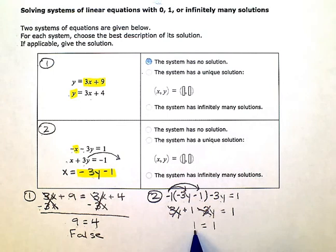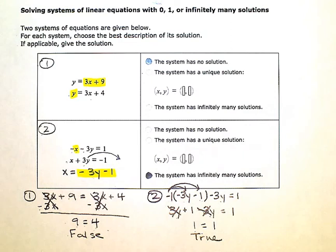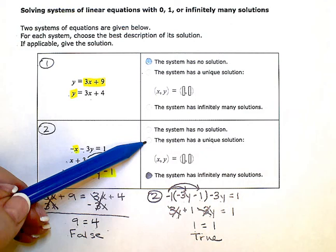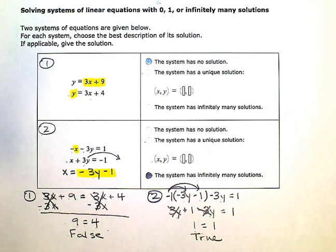Now, as I was saying earlier with this example, if all your variables drop out and you're left with a true statement, then the answer is the system has infinitely many solutions. Now, if I would have solved either of these two problems and my variables didn't all zero out, and I could actually solve through and end up with x equals a value or y equals a value, then I would have chosen the second option, the system has a unique solution, and I would have listed the values, the x and the y values from my solution.